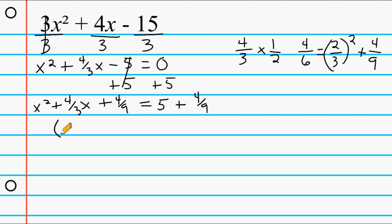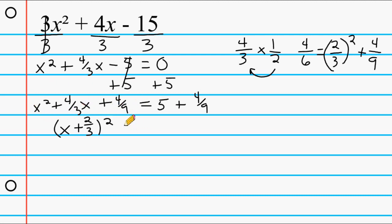Now write the binomial that when squared gives this trinomial. The first position is always x, and the second position is half of the b term, which we already found to be 2/3. So we get (x + 2/3)². On the right-hand side, we have 5 + 4/9. Convert 5 to a fraction: 5 = 45/9, so 45/9 + 4/9 = 49/9.